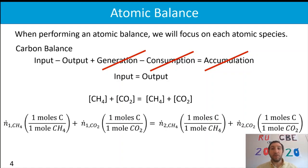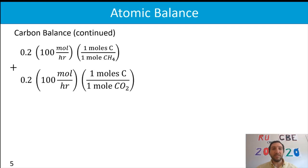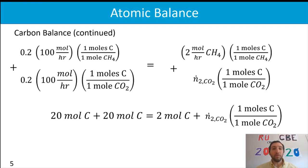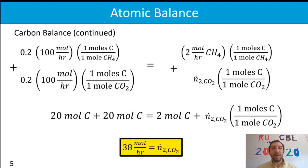We substitute our known inlet values, converting the methane and carbon dioxide coming in. We find 20 moles of carbon from methane and 20 moles from carbon dioxide entering the system. On the output side, there are two moles of carbon from methane, plus an unknown amount from carbon dioxide. Rearranging and solving for N₂CO₂, we find there are 38 moles per hour of carbon dioxide in stream two.